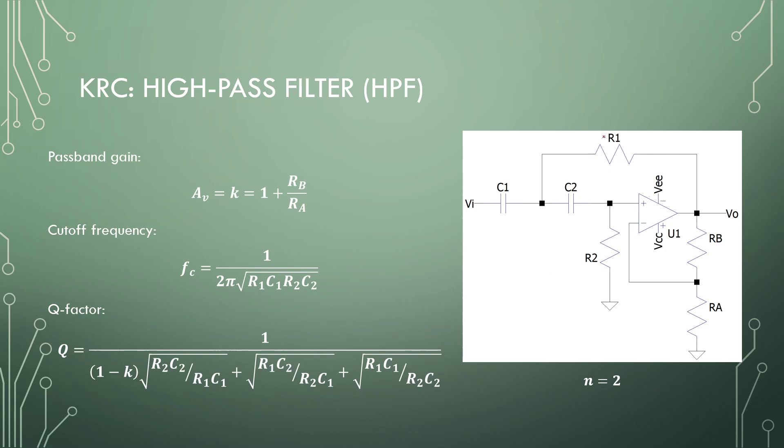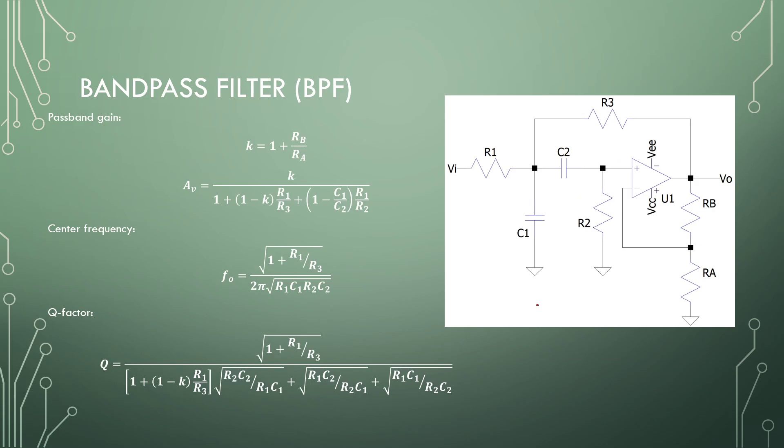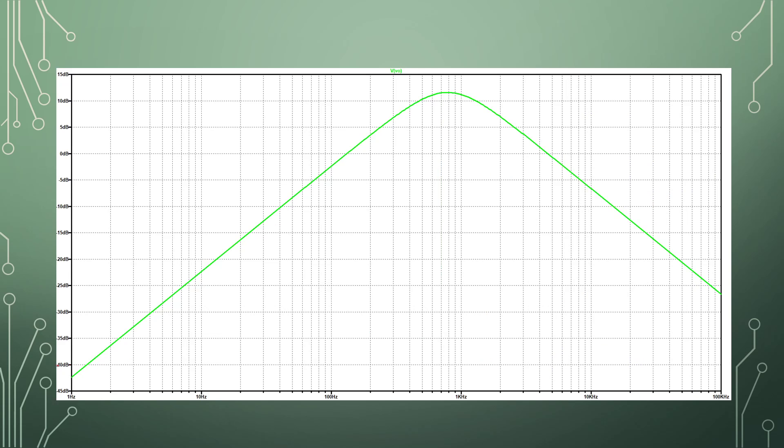For a high pass filter, the positions of the capacitors and resistors just changed, and the equations remain roughly the same. Band pass filters are the ones that have this nice area around the center frequency.